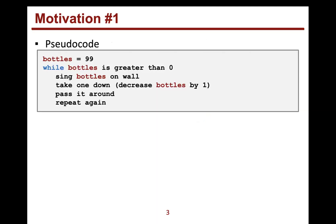To start thinking about this, let's talk about creating pseudocode — not real code, but what we're thinking about. We're going to create a variable called 'bottles' and set it equal to 99. Then while the number of bottles is greater than zero, we're going to sing the little phrase, take one down — meaning decrease the number of bottles by one — pass it around, print that, and then repeat this over and over again.